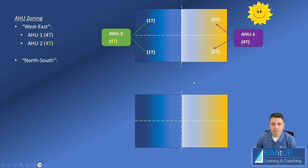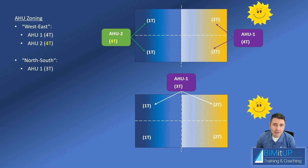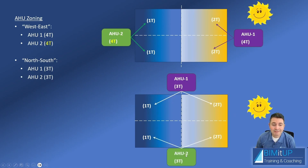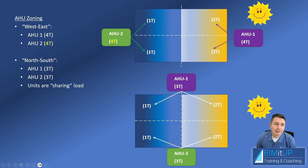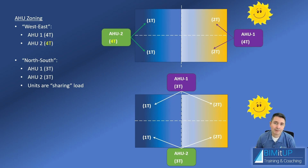Whereas if you zone north-south with the same building and tonnage, AHU-1 on the north side handles two tons plus one ton — so three tons — and AHU-2 on the south handles two tons on the east and one ton on the west. The units share the load more evenly. That said, there are many variables to consider, some of which may contradict what I'm saying — it really depends on your particular case.